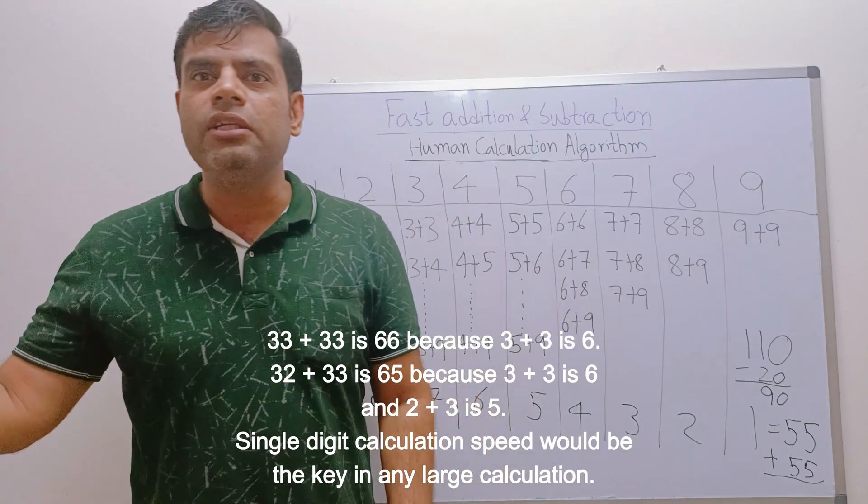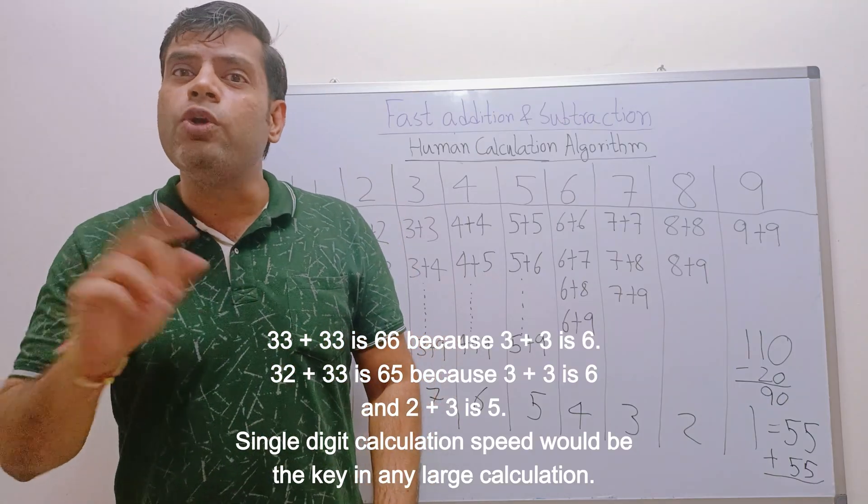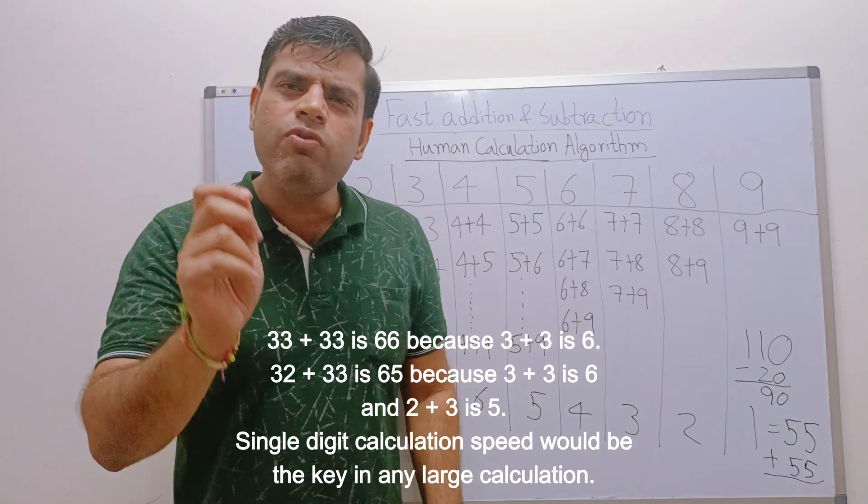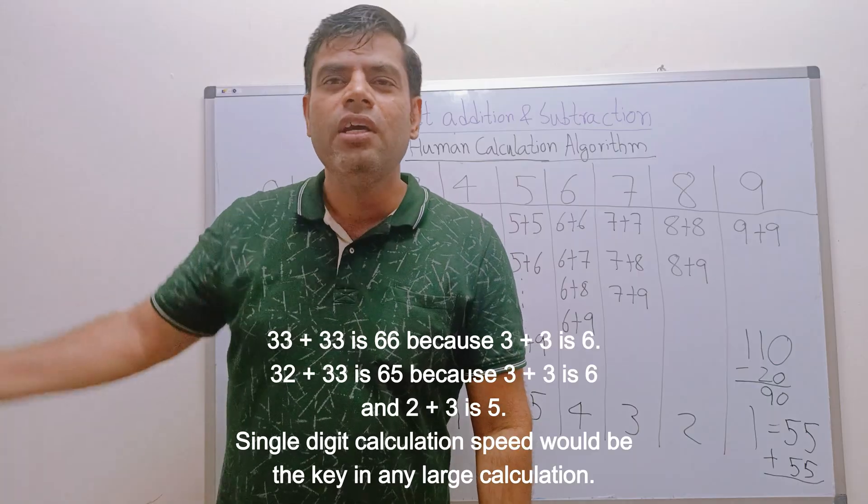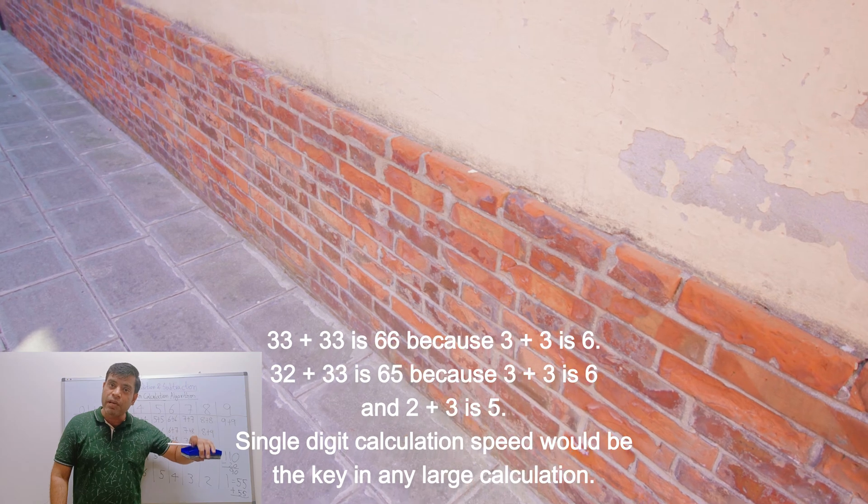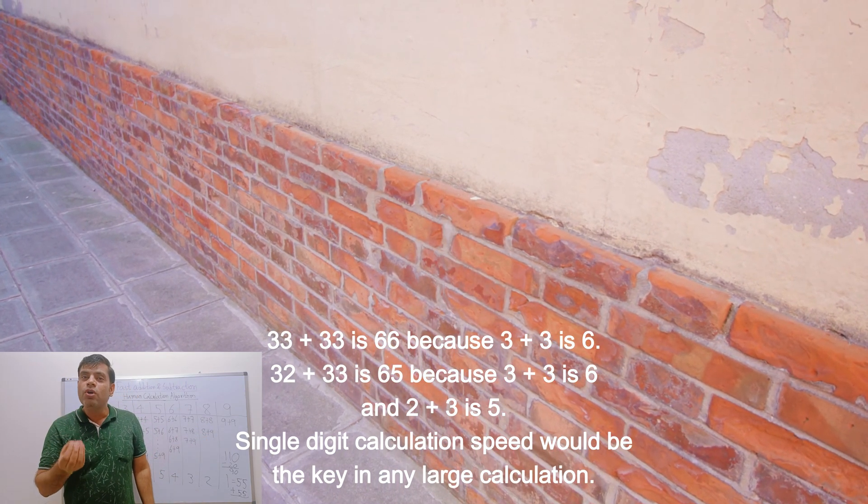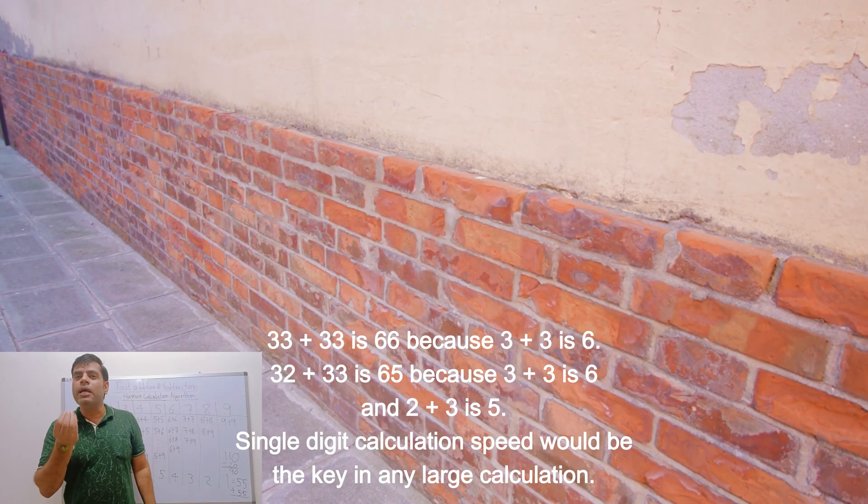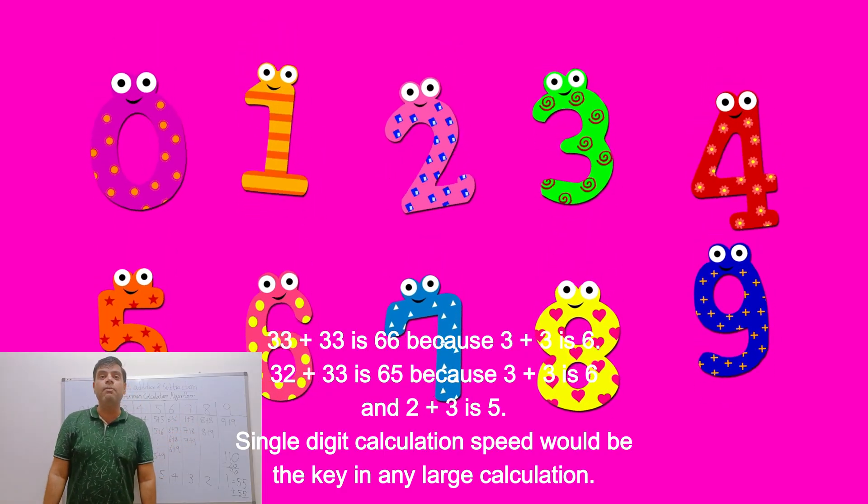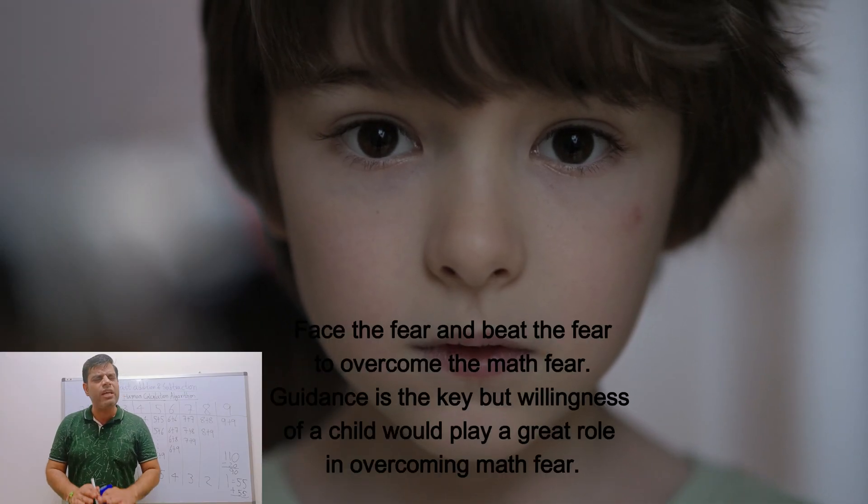You saw that once you start doing single digit calculation, this will help you in double digit also. For example, 33 plus 33 is 66, why? Because 3 plus 3 is 6, 3 plus 3 is 6. 32 plus 33 is 65, why? Because 3 plus 3 is 6, 2 plus 3 is 5. How you do double digit or three digit calculation fast? If you know single digit. To build a great house you should have understanding of bricks. To become a great mathematician you should have understanding of 0 to 9.